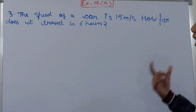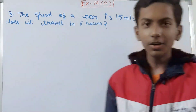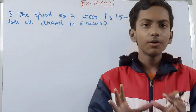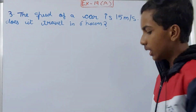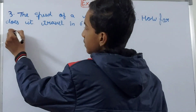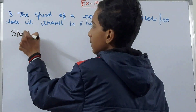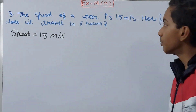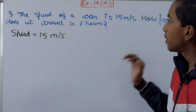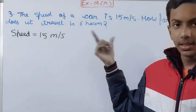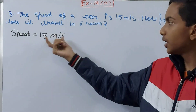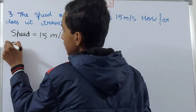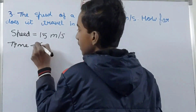The question is: the speed of a car is 15 meters per second — how far does it travel in 6 hours? So the speed is 15 meters per second, meaning it travels 15 meters in one second. The time given is 6 hours.